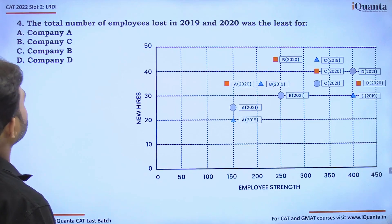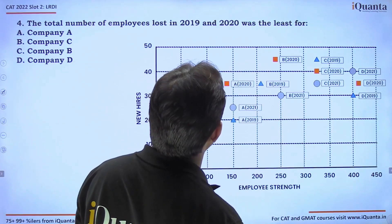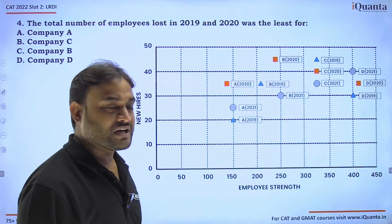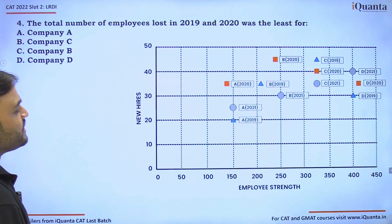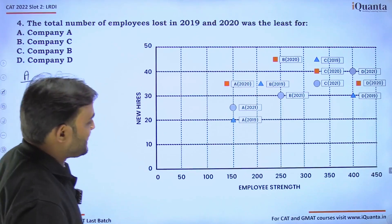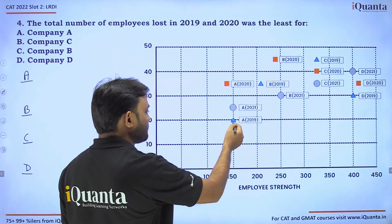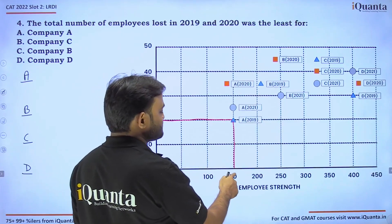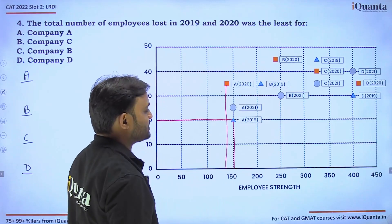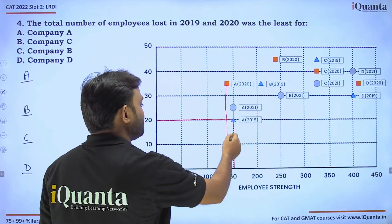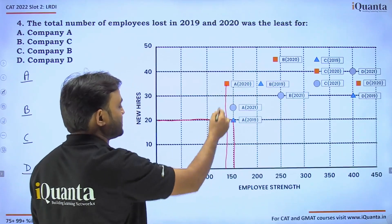Question four: the total number of employees lost in 2019 and 2020 was the least for which company? For company A in 2019, there are 150 employees and 20 new hires, giving 170 total. But in 2020 there are only 140 employees, so 30 employees were lost in 2019.